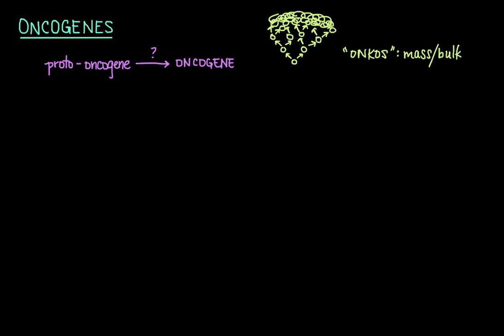So how does a proto-oncogene make that switch into an oncogene? There are three main mechanisms: deletion or point mutation; gene amplification or increased mRNA stability; and chromosomal rearrangement.